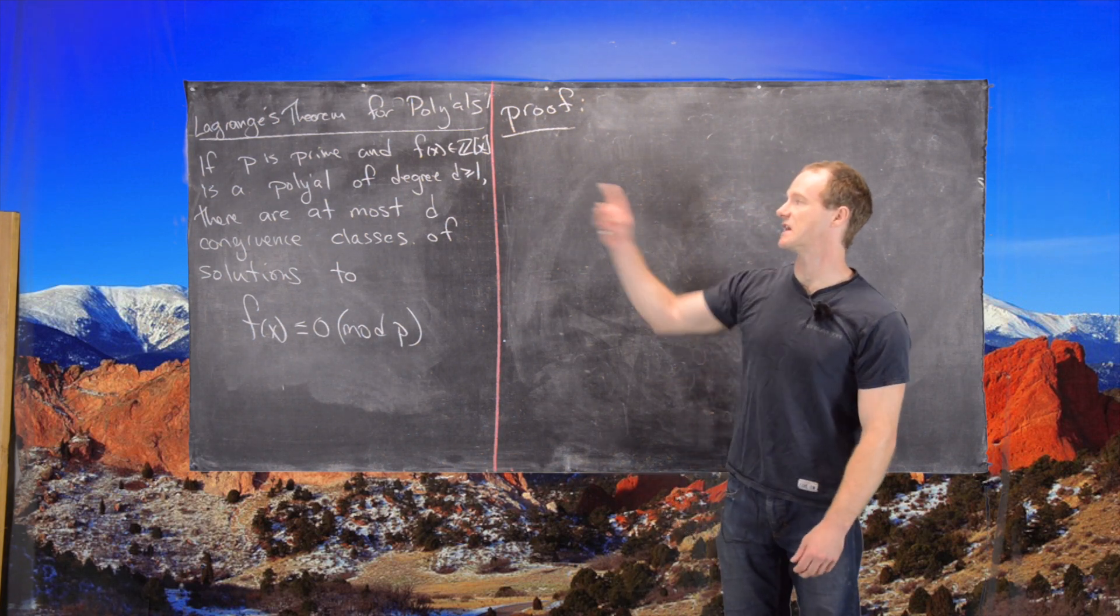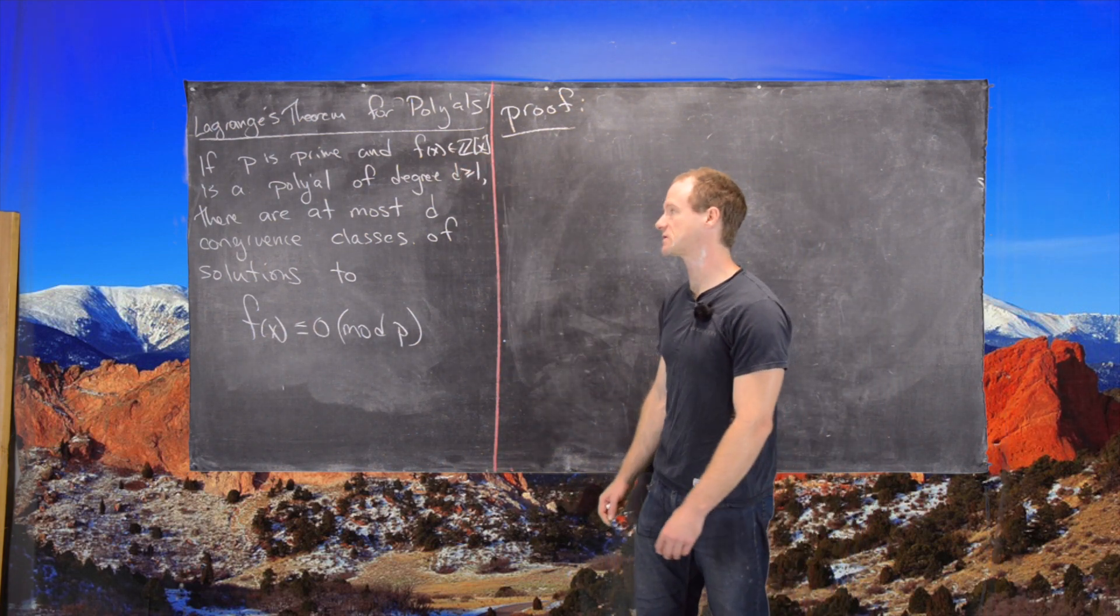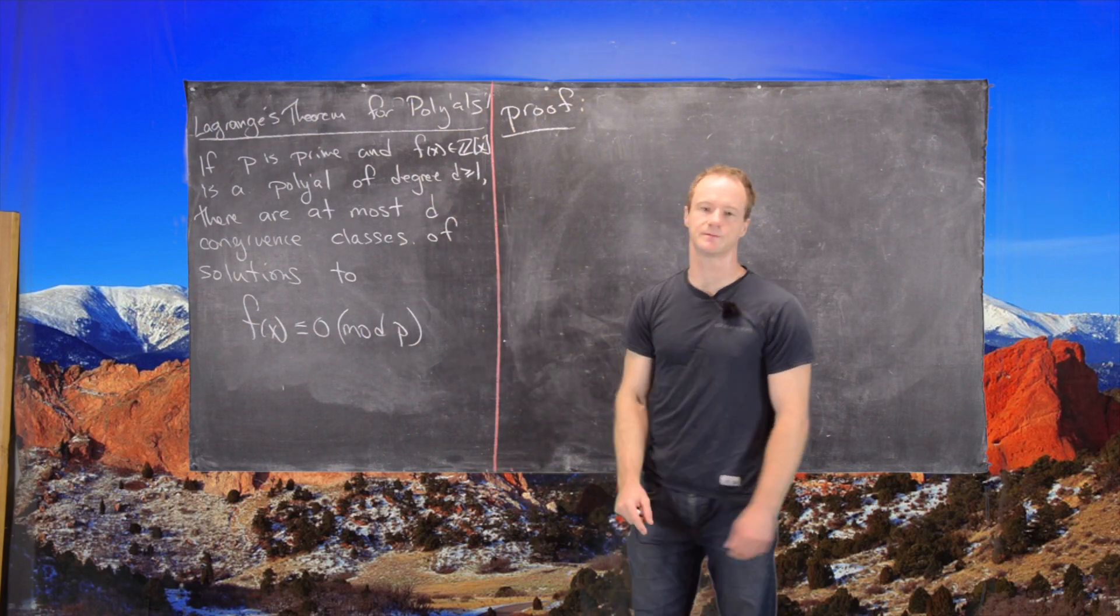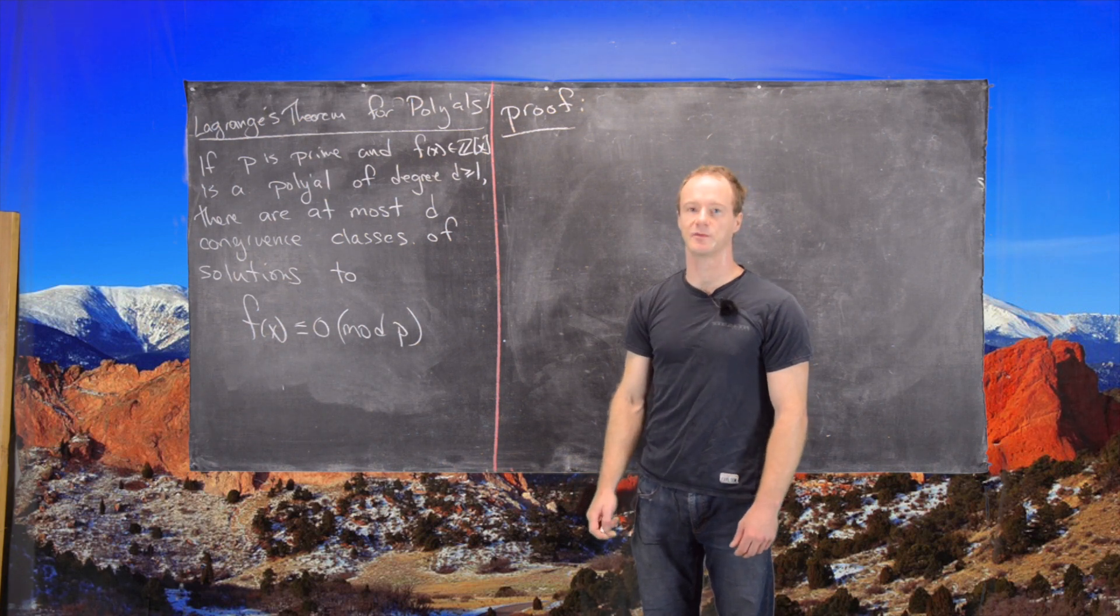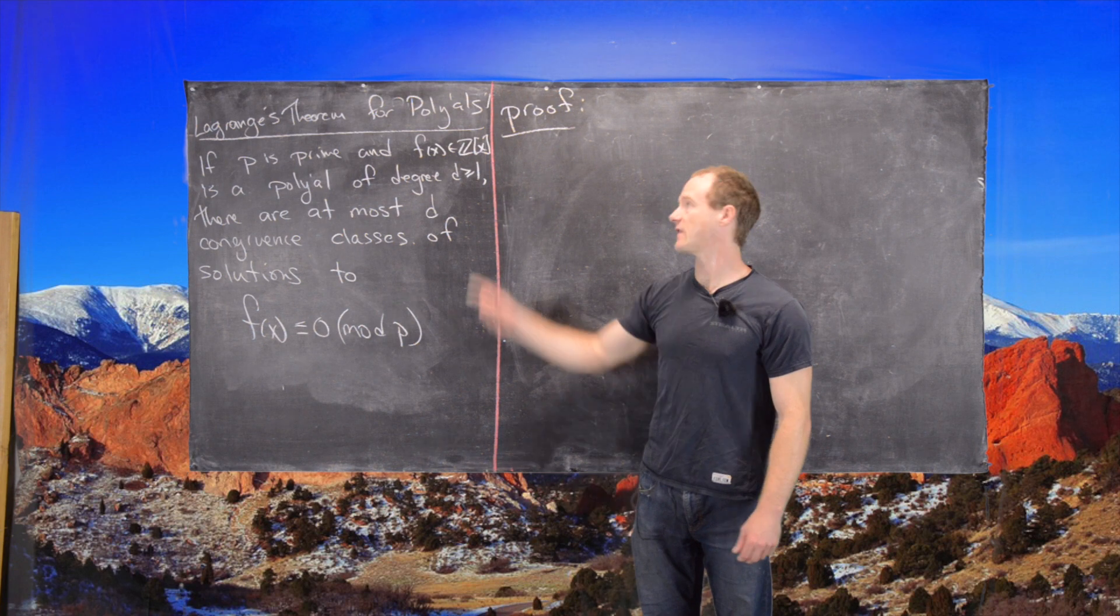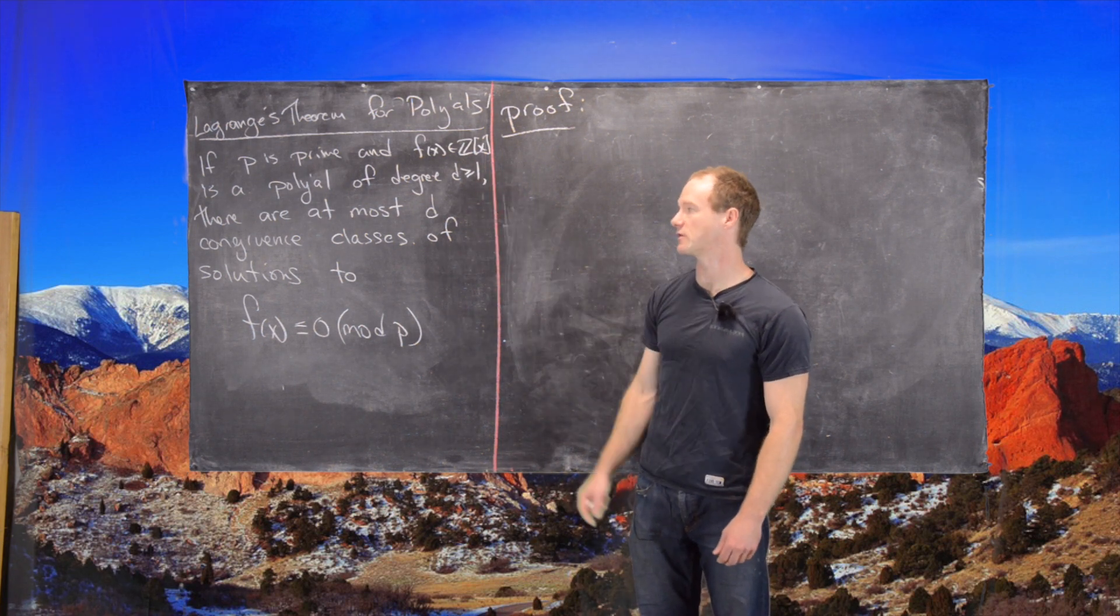It says that if P is a prime and F of X is a polynomial with integer coefficients of degree greater than or equal to 1,